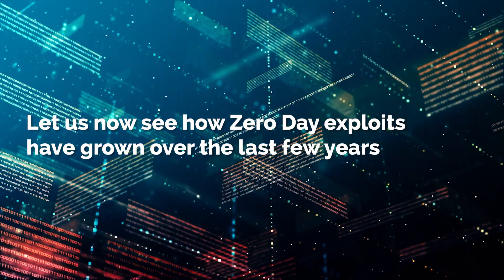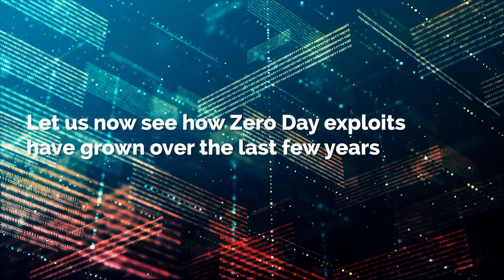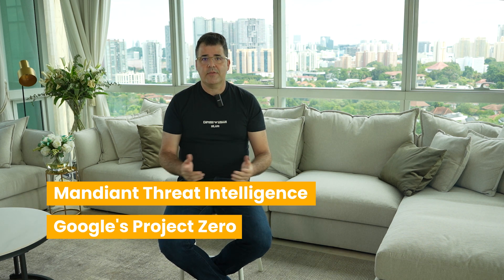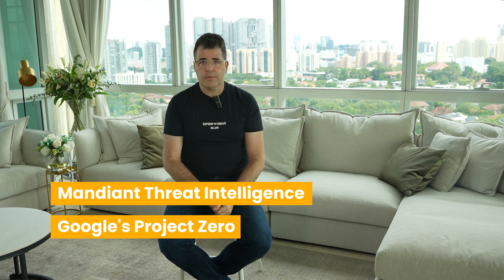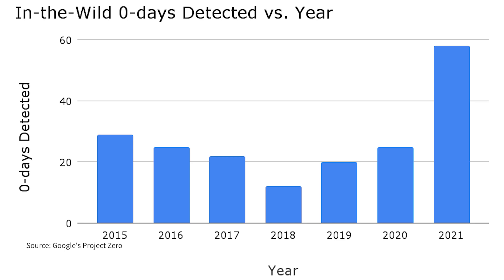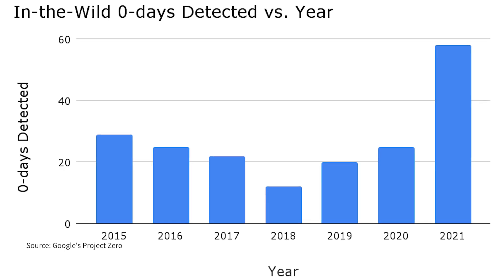Let us now see how zero-day exploits have grown over the last few years. Ever since the beginning of 2021, there has been a significant increase in zero-day attacks worldwide. The volume and variety of zero-day attacks were noted by Mandiant Threat Intelligence and Google's Project Zero. Google's Project Zero is the tech giant's bug-hunting team. They tracked 58 zero-day exploits in 2021 — a number more than double than the previous year, which was 25.